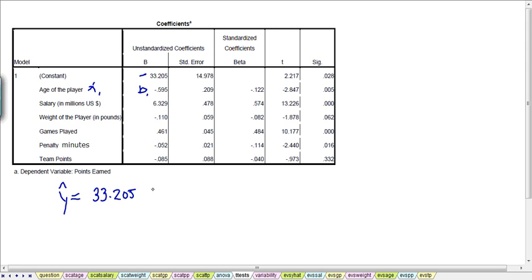So B1 is negative, so this is negative .595X1, and so on. So this is X2, this is our coefficient for X2, so that's B2, and the coefficient value is 6.329X2.